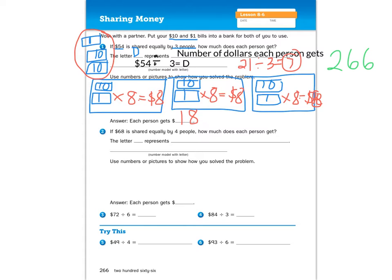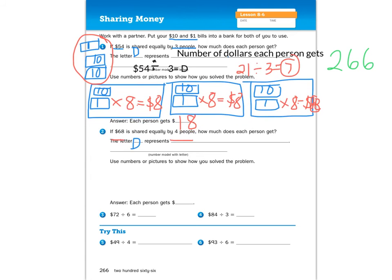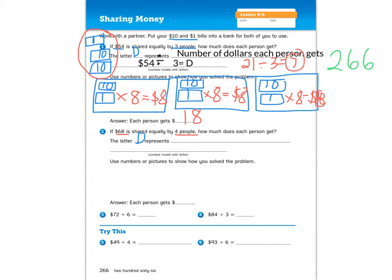For number two, we're going to do this in a similar way. It says, if $68 is shared equally by four people, how much does each person get? And so the letter, again, can be the letter D for dollars. And then we're going to do the same thing that we wrote up above. So D stands for the number of dollars each person gets. And we know that this time we have $68 and we want to divide it between four people. And our answer is going to be that letter D, number of dollars each person gets. So this time I'm going to draw four rectangles because I'm sharing with four people this time.